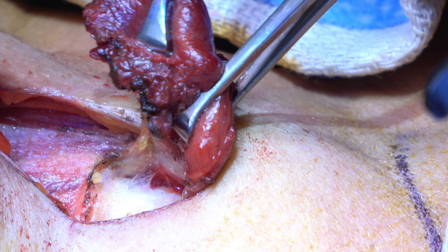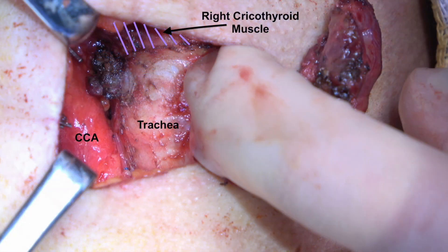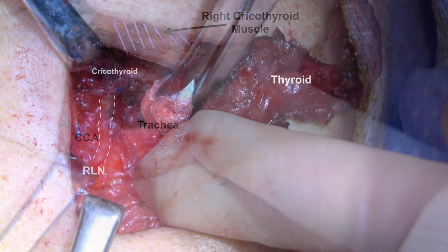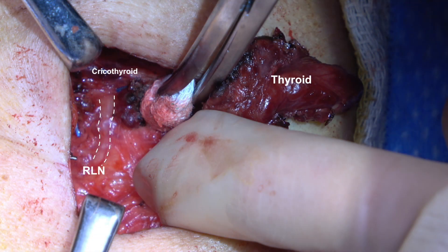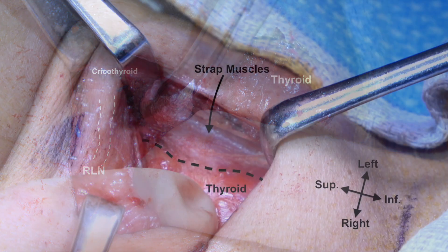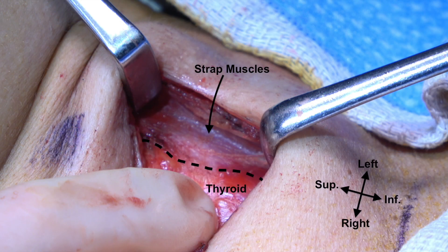The rest of the right side of the gland is removed from the trachea and delivered. We can now see the right half of the resection cavity with the skeletonized trachea, right cricothyroid muscle, common carotid artery, and recurrent laryngeal nerve. We now turn our attention to the left side.